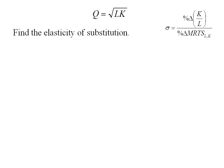Our formula will be sigma equals the percent change in the capital labor ratio over the percent change in the marginal rate of technical substitution. Our marginal rate of technical substitution is the ratio of the marginal product of labor to the marginal product of capital.